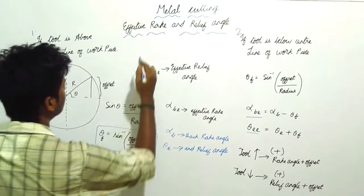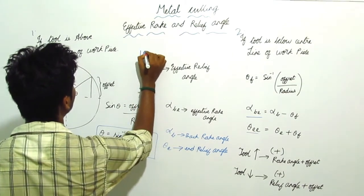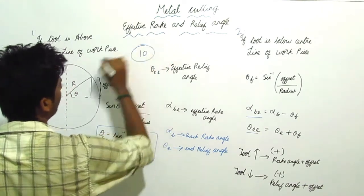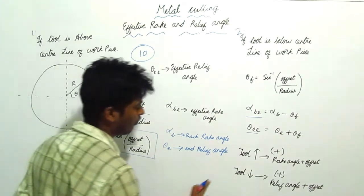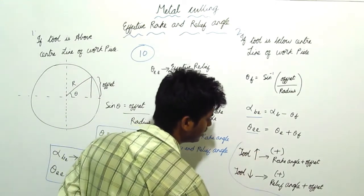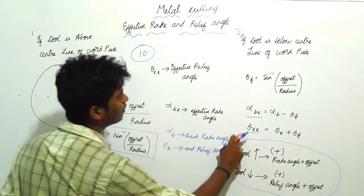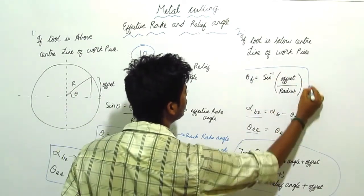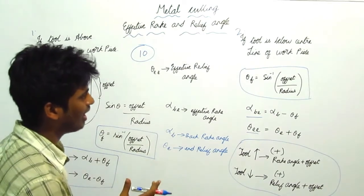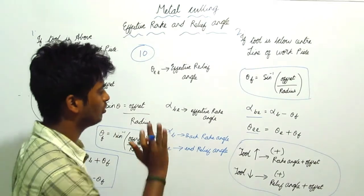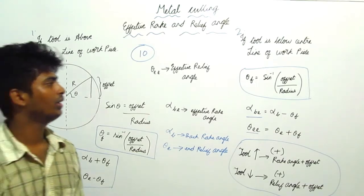Altogether, this is formula number 10 — the final formula in metal cutting operations. For the GATE exam, you have to remember this table. Also remember: θ_f = sin⁻¹(offset / radius). This is very rarely asked in the GATE exam, but you should remember it. Good, thank you!